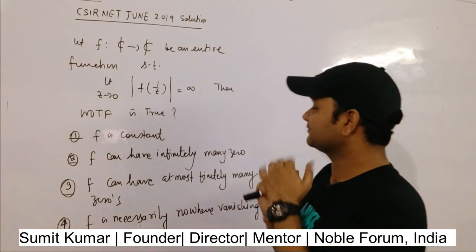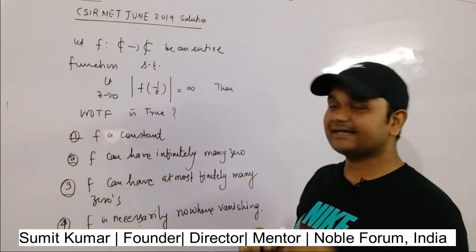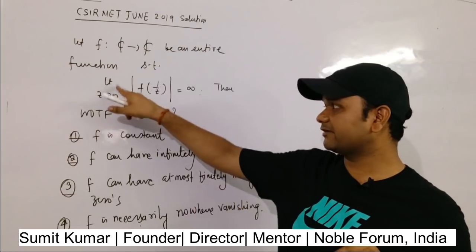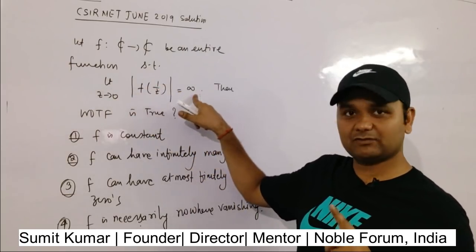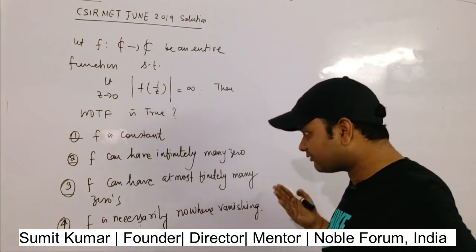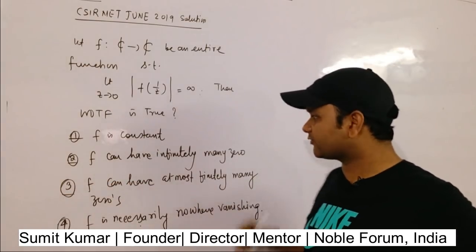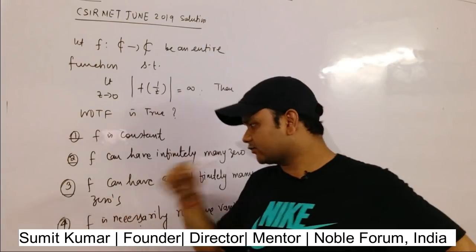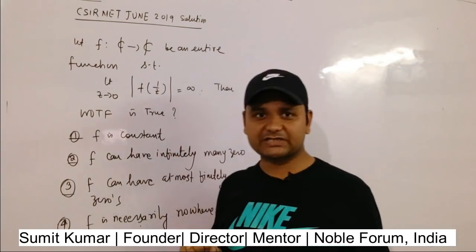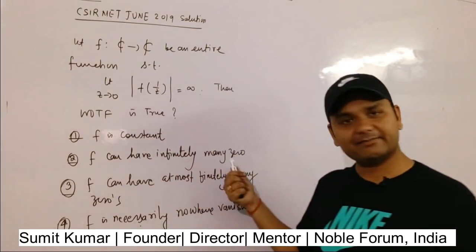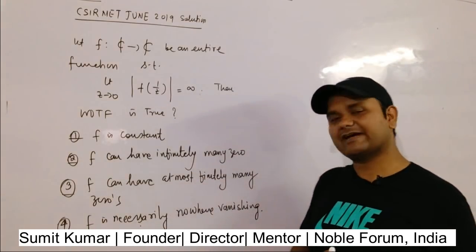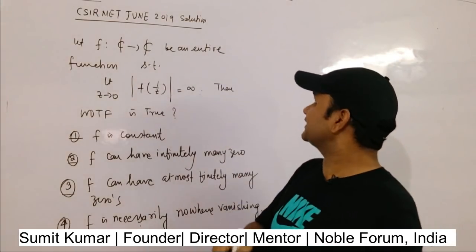The question is: f is a function from ℂ to ℂ, an entire function, such that the limiting value as z tends to 0 of |f(1/z)| equals infinity. Then which of the following is true? Option 1: f is constant. Option 2: f can have infinitely many zeros. Option 3: f can have at most finitely many zeros. Option 4: f is necessarily nowhere vanishing.